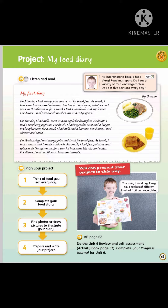My Food Diary. On Monday, I had orange juice and cereal for breakfast. At break, I had some biscuits and a banana. For lunch, I had meat, potatoes and peas. In the afternoon, for a snack, I had a sandwich and apple juice. For dinner, I had pizza with mushrooms and red peppers.